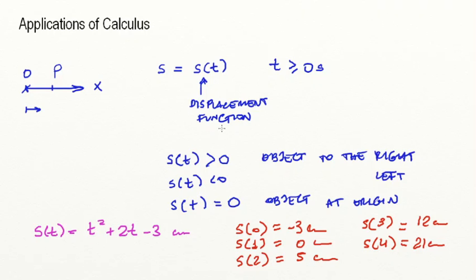Remember that displacement is a position. So the units should be centimeters, meters, millimeters — it depends on what you're given. In this case, my function was defined to give displacements in centimeters, so that's why my results are like that.